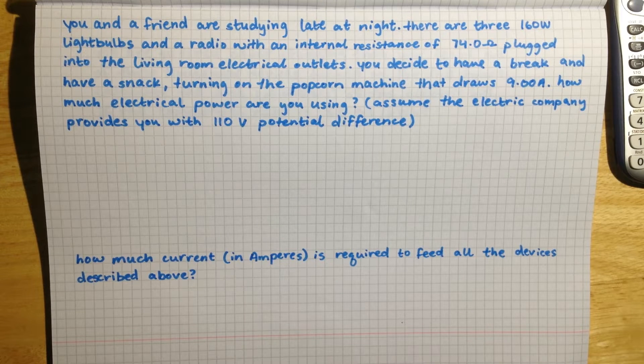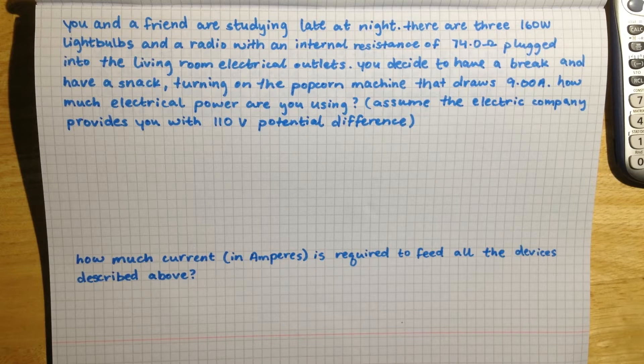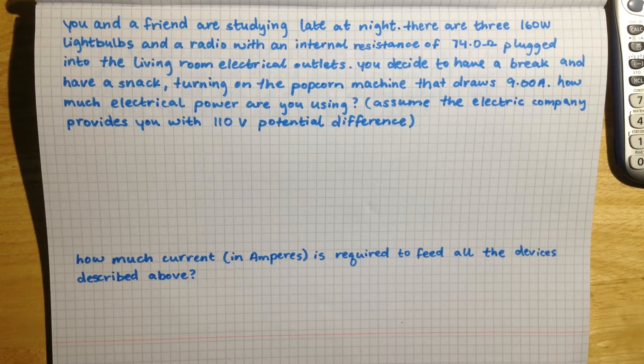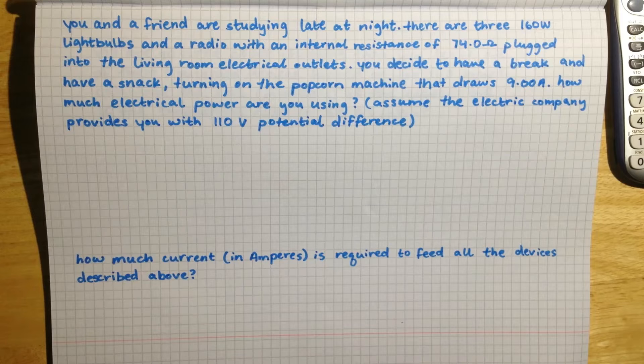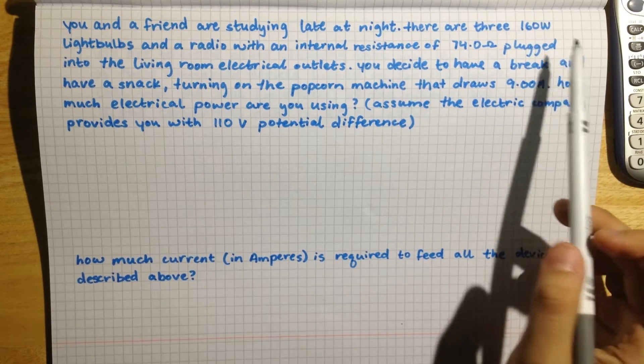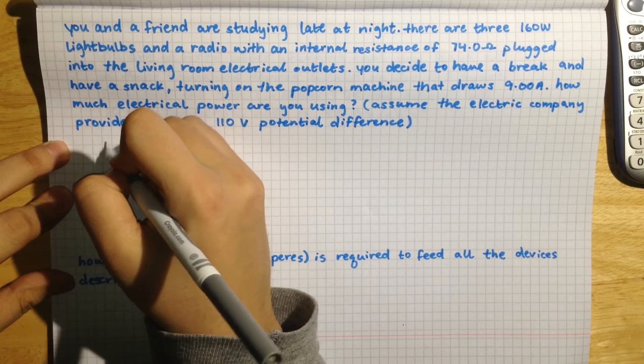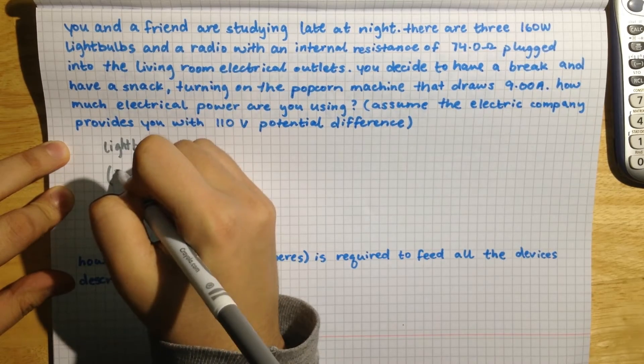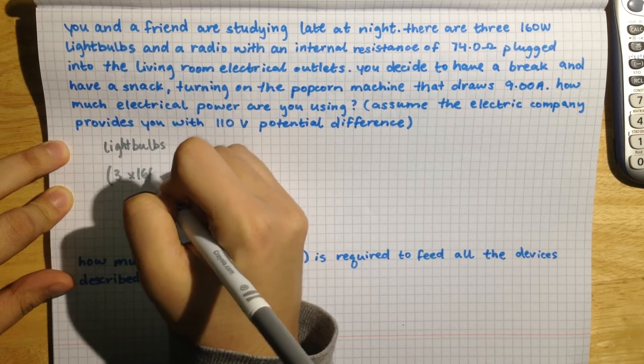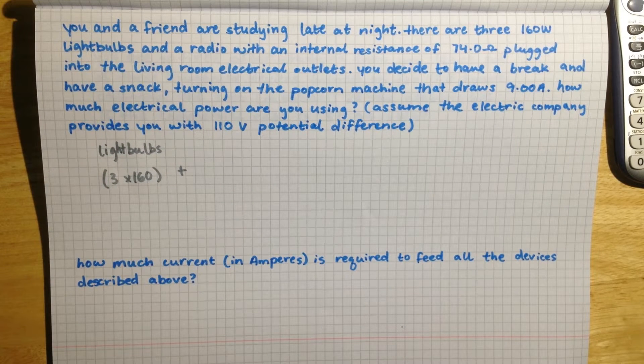The first thing in the problem is the three light bulbs, and since their wattage amount is given, that is already the SI unit for power, so we don't have to do any calculation other than multiply 160 watts by the three light bulbs that are on. So for the light bulbs it's simply three times 160.